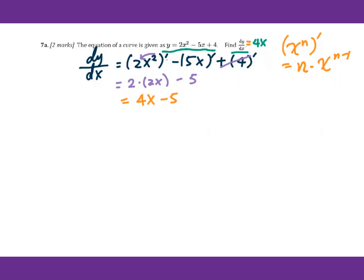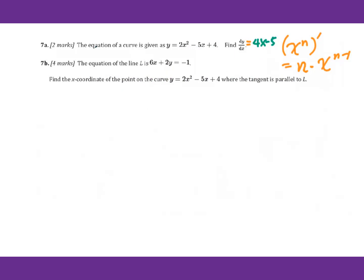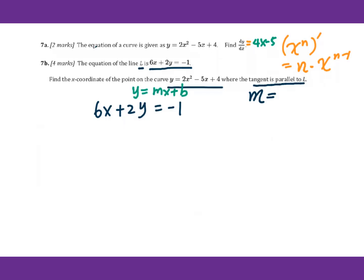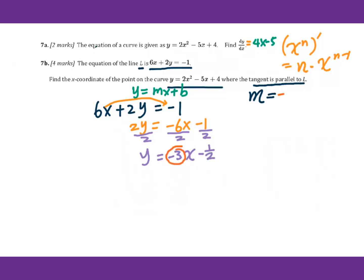So dy/dx equals 4x minus 5. For 7b, the equation of line L equals this. Find the x coordinate of points on the curve y equals 2x squared minus 5x plus 4 where the tangent line is parallel to L. Parallel to L means the slope will be the same. For 6x plus 2y equals negative 1, we need to change into y equals mx plus b format. Move 6x to the other side: 2y equals negative 6x minus 1. Divide by 2: y equals negative 3x minus one half. So the slope is negative 3.